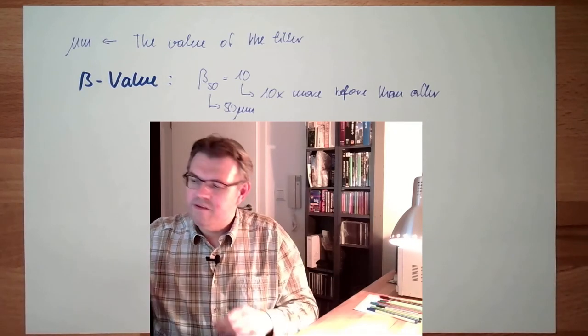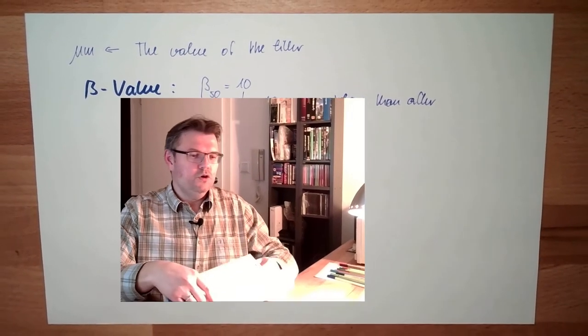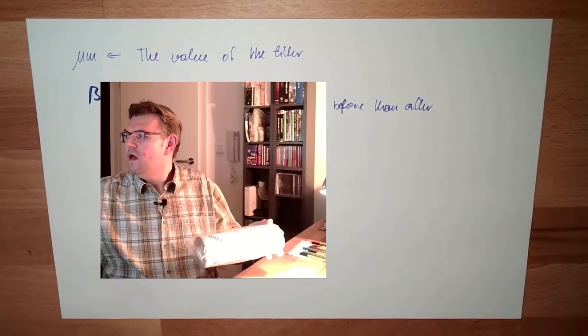There are 10 times more particles before the filter than after the filter. That's the beta value. For instance, I have here such a filter element. I can show you how this looks like.